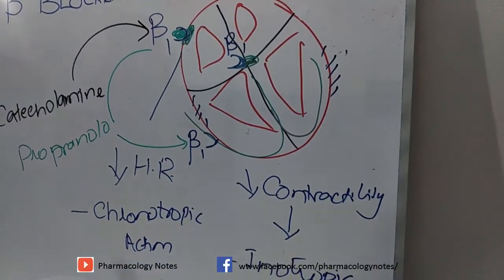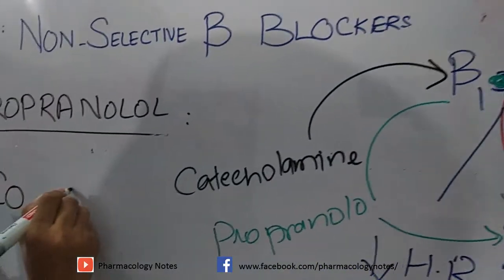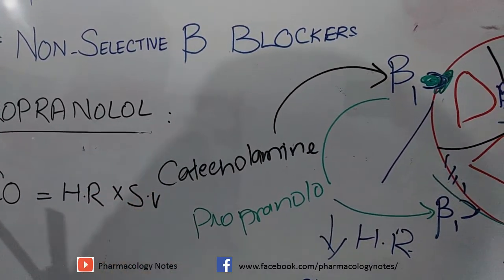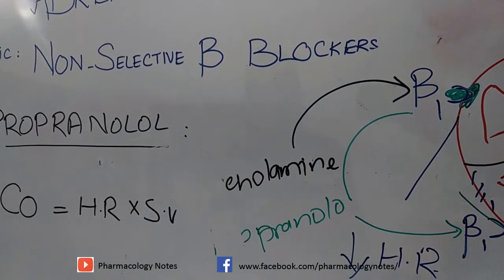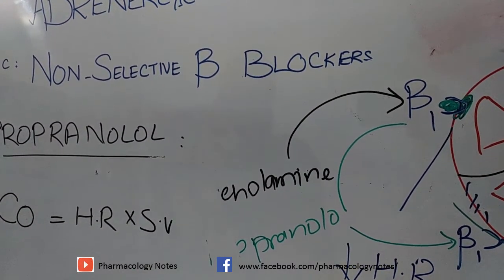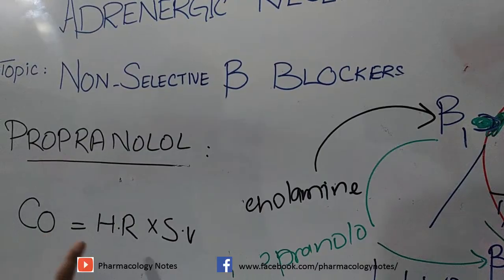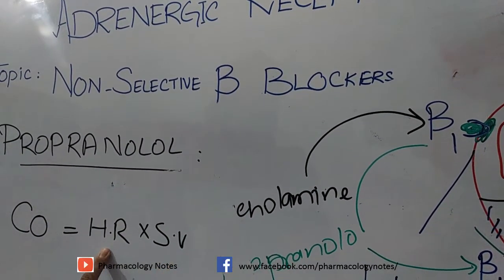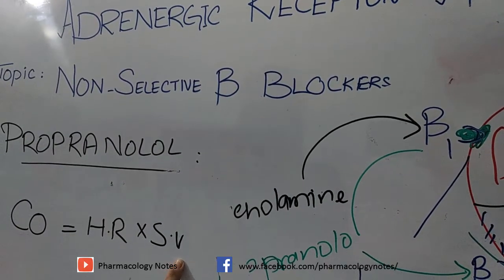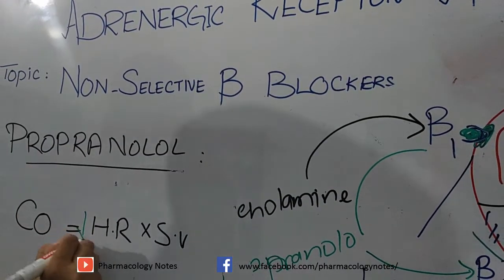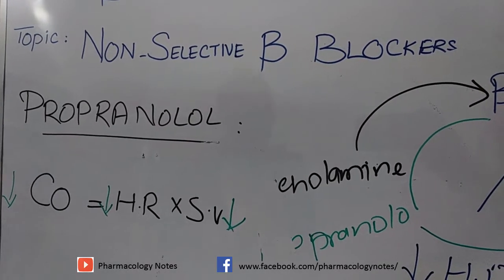Propranolol decreases cardiac output. Cardiac output equals heart rate multiplied by stroke volume — where heart rate is how many times the heart pumps blood per minute, and stroke volume is the volume ejected per pump. Cardiac output decreases because heart rate decreases due to SA node blockage, and stroke volume decreases due to blockage of beta receptors at the myocardium. This is why propranolol can be used in myocardial infarctions and cardiac arrhythmias.